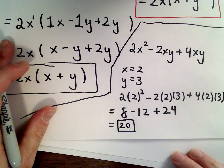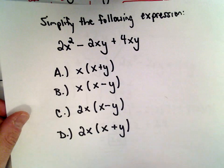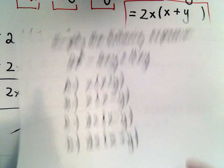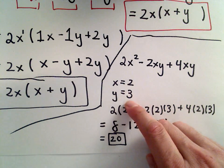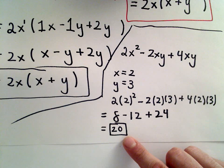So now what you could do is you could go back to all of your answer choices. And you could substitute into each one of these 1, 2, 3, 4. You could substitute in the value x equals 2 and y equals 3. And see which one of these gives you the value of 20.